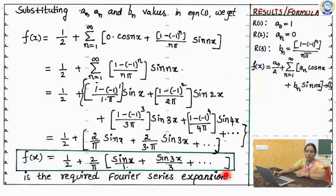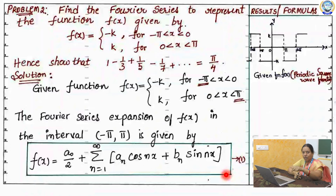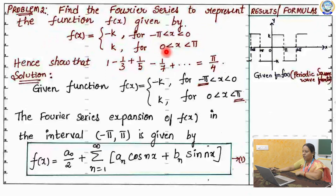In the previous problem, we obtained a Fourier series expansion for a discontinuous function in the interval 0 to 2 pi. Now in the second problem, we will discuss the same concept for a discontinuous function in the interval minus pi to plus pi. Find the Fourier series to represent a function f of x — here also a discontinuous function. Draw the graph for this function and then find the Fourier series, and also deduce a result.